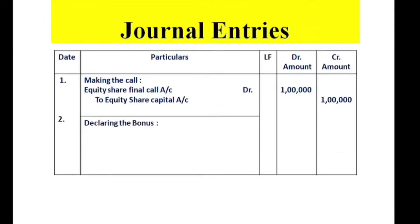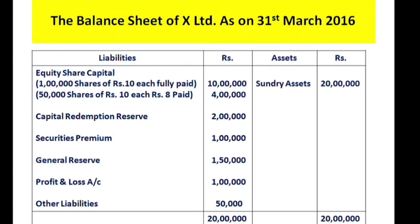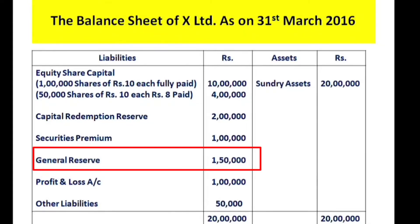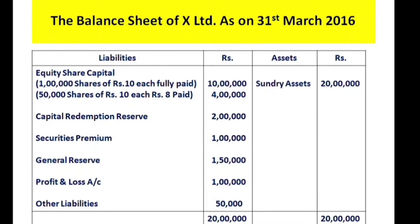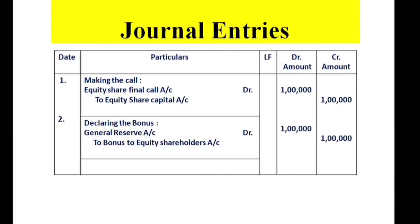Next — declaring the bonus. We need to use reserves such as General Reserve, Securities Premium, or Profit and Loss Account. From General Reserve, we can use ₹1,50,000. Journal entry: General Reserve Account Dr. ₹1 lakh, to Bonus to Equity Shareholders Account ₹1 lakh.